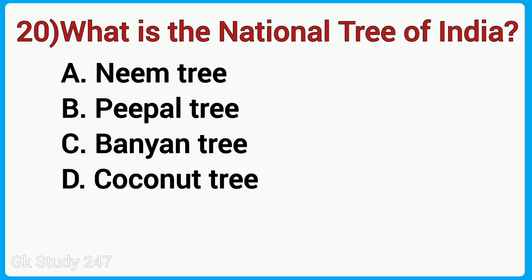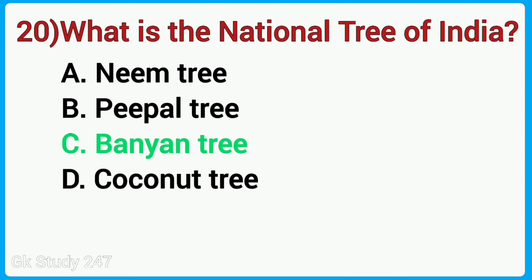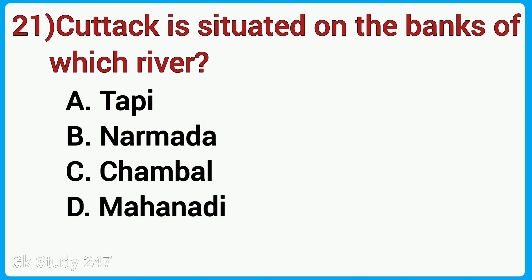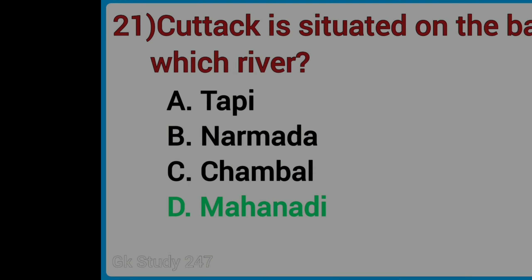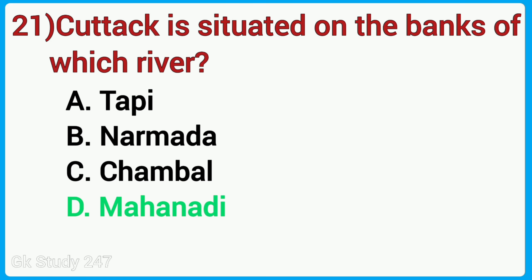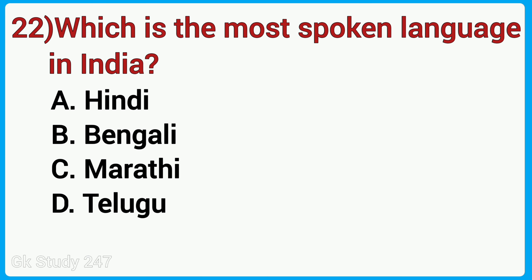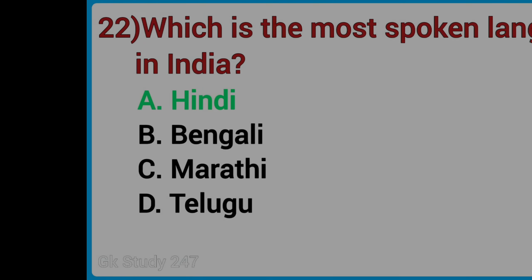What is the national tree of India? Answer is Banyan Tree. Cuttack is situated on the banks of which river? Answer is Mahanadi River. Which is the most spoken language in India? Answer is Hindi.